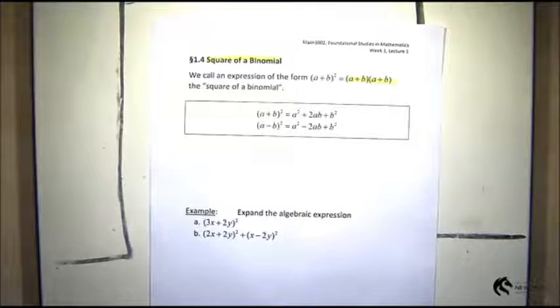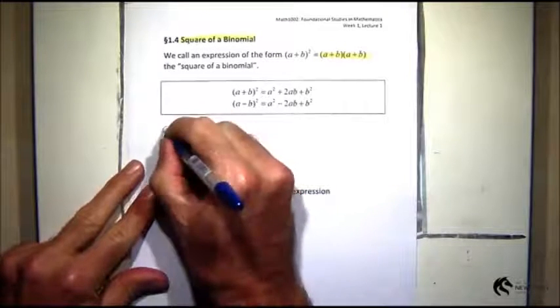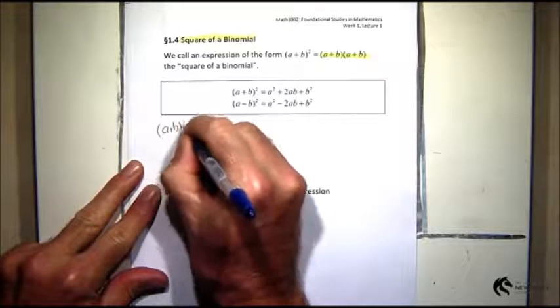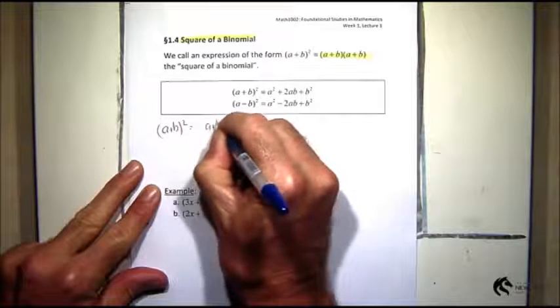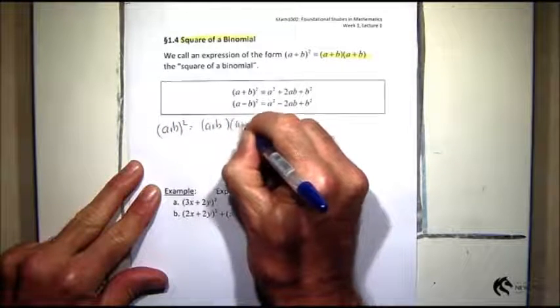It's just a special case of what we did before, so let me go through and do it. If I go (a + b) all squared, that's (a + b) times (a + b). Now let me use my FOIL on that.